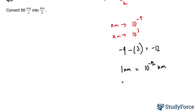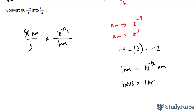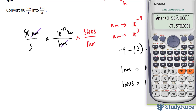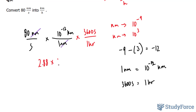Another conversion factor we already know is that 3,600 seconds equals 1 hour. Starting with 80 nanometers over seconds, we apply the conversion factor — 1 nanometer equals 10 to the power of negative 12 kilometers — which cancels out the nanometers. Then, from seconds to hours, we use 3,600 seconds at the top and 1 hour at the bottom. Multiplying all of this out: 80 times 10 to the power of negative 12 times 3,600 gives us 2.88 times 10 to the power of negative 7 kilometers per hour.